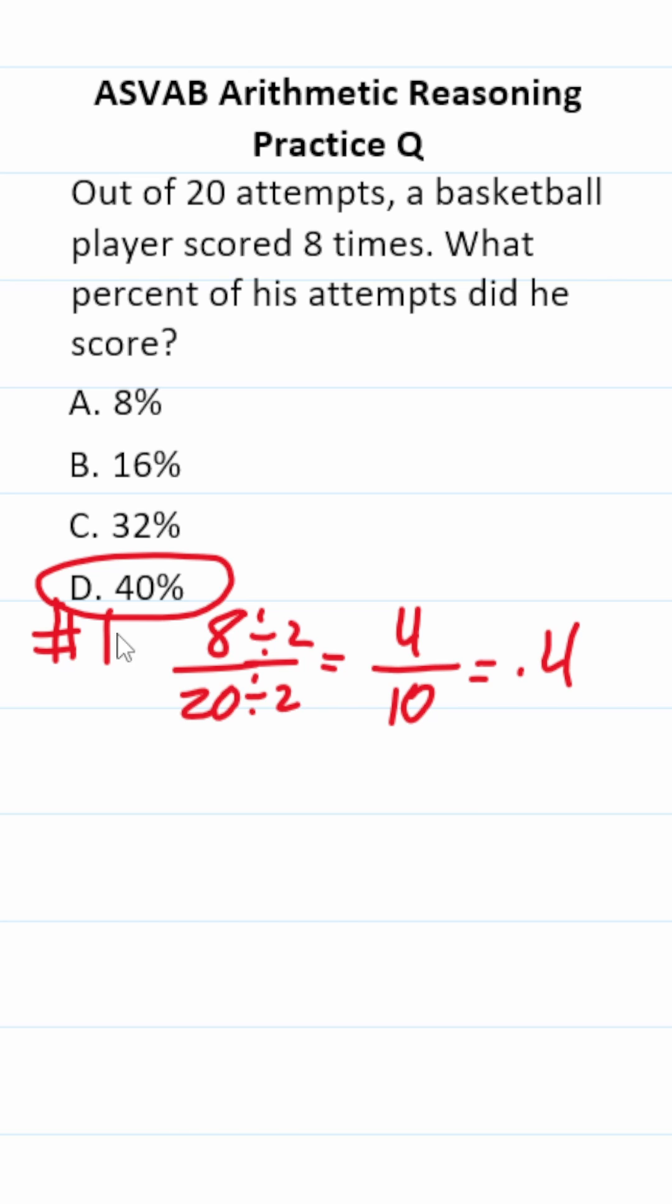The other way to view this one is like this: You have a basketball player who scored eight out of 20 attempts. You multiply this by five, this becomes 100, and you have to multiply this by five, this becomes 40. 40 out of 100 is also 0.4.